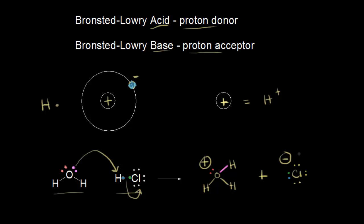Let's identify the Brønsted-Lowry acid and base for this reaction. H₂O, the water, acted as a proton acceptor—it accepted a proton from HCl—so water is our Brønsted-Lowry base. HCl donated a proton to water, so HCl is our Brønsted-Lowry acid.